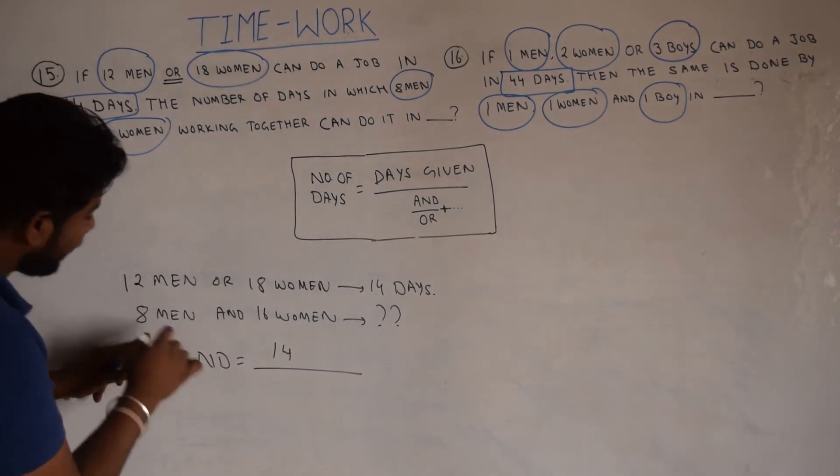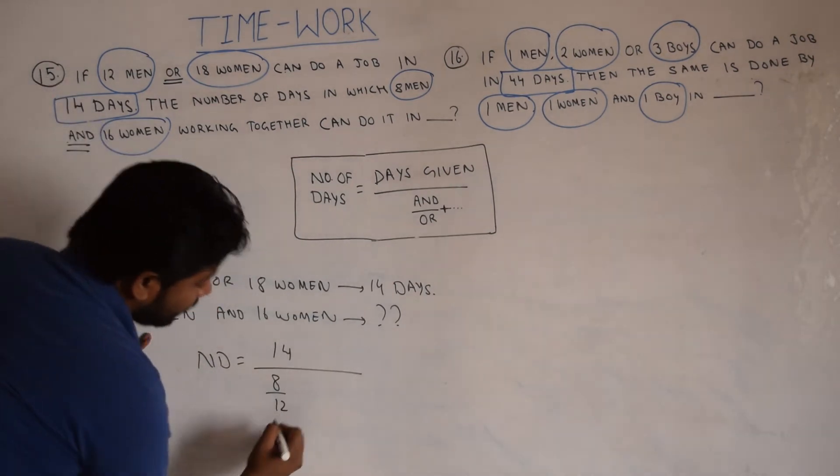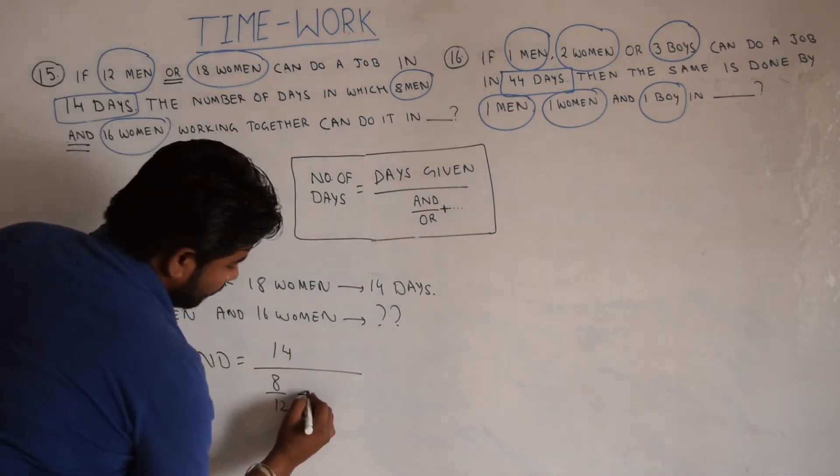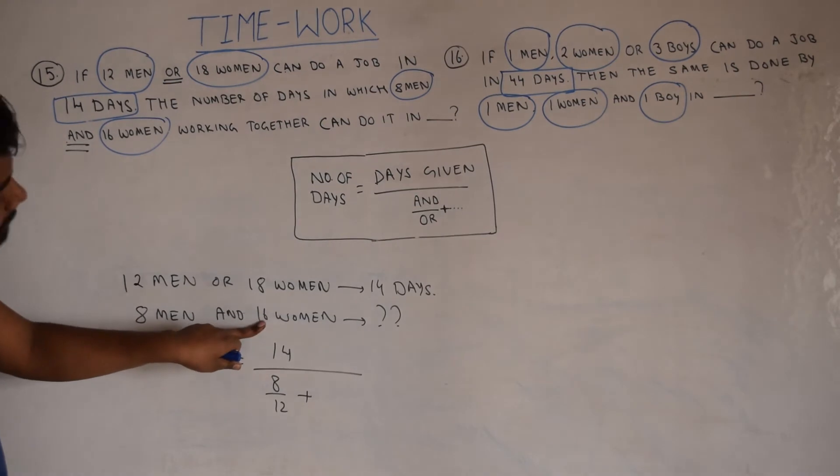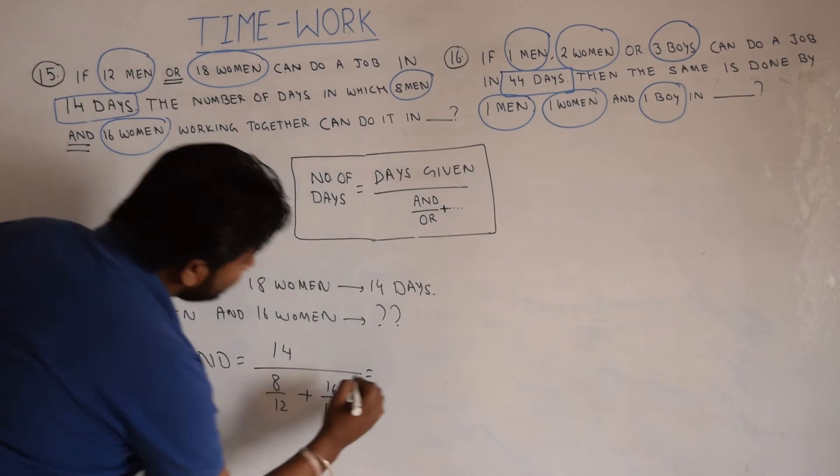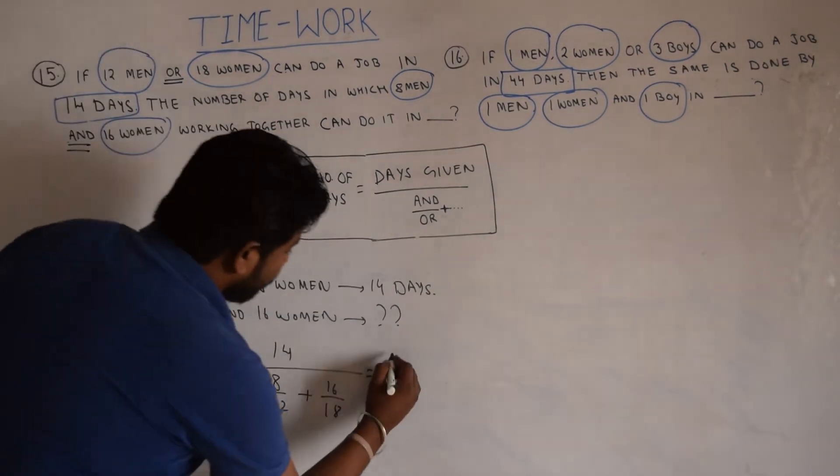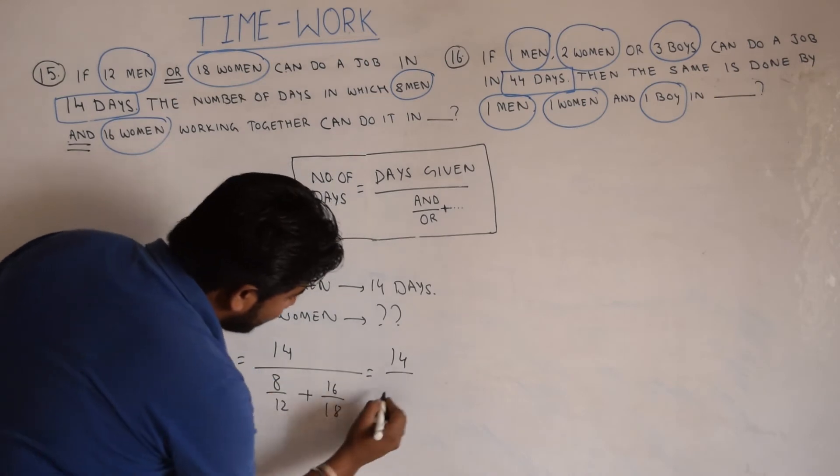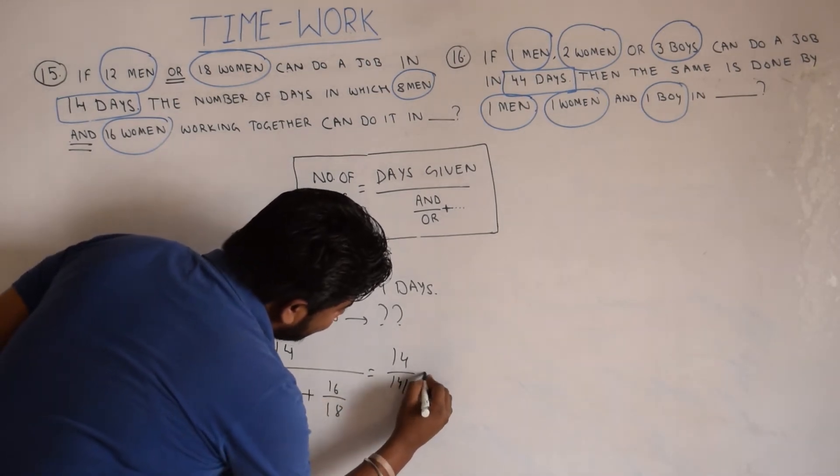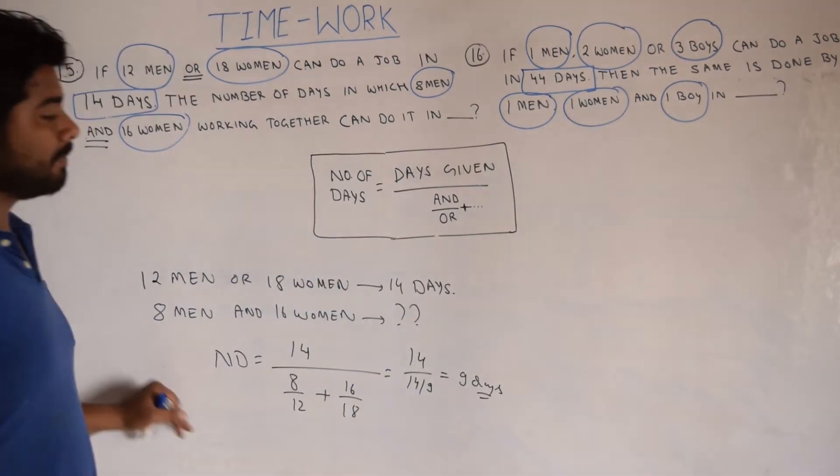For men, AND has what? 8. OR has what? 12. So 8 by 12 plus, for women AND has what? 16. OR has what? 18. Simply this is the number of days in which they are going to complete the work. It will be 14 divided by this, calculate this. It will be 14 divided by 11 by 6, that is 9 days. In 9 days the work is completed.